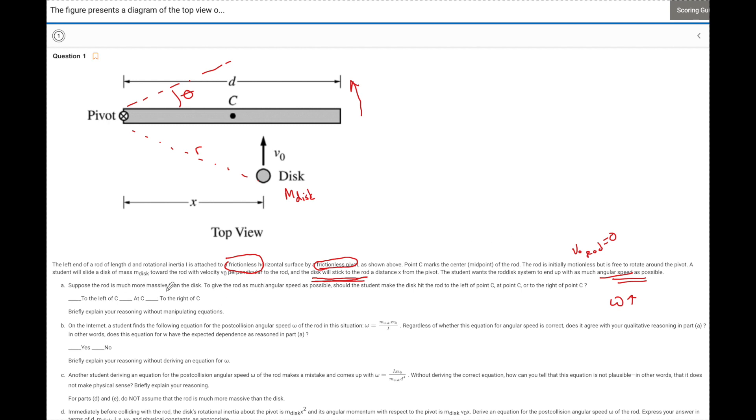So now let's work on some of these questions. Suppose that the rod is much more massive than the disc to give the rod as much angular speed as possible. Should the student make the disc hit it to the left of point C, to the middle of C, or out here to the right of C. Now guys, this one needs to be a layup, okay? It's going to be to the right of C. And there's a number of different explanations that you can give for this. The easiest one is as you hit the rod further from the impact point, you are going to apply more torque. Torque equals some perpendicular force times R. So as R goes up, so does torque.